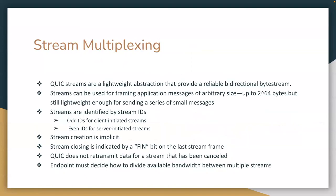QUIC streams are lightweight and provide a reliable bi-directional byte stream. Streams can be used for large applications up to 2^64 bytes, but are also lightweight enough for series of small messages. They're identified by particular IDs — odd for clients, even for servers — to reduce collisions. Stream creation is implicit; stream closing is indicated by a FIN bit on the last frame, so no extra transmissions are needed for creating and closing like with traditional TCP. QUIC does not retransmit data for a stream — instead it cancels and reopens another. Endpoints decide how to partition bandwidth among multiple streams.